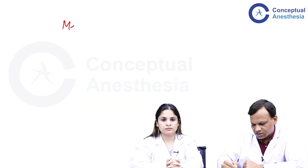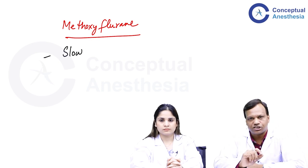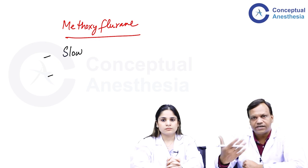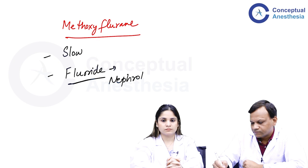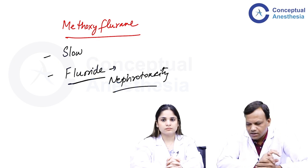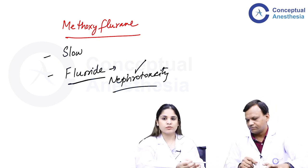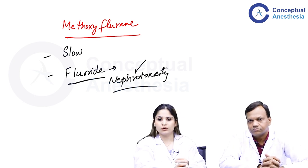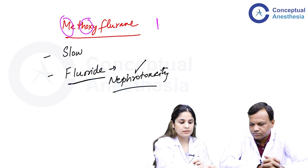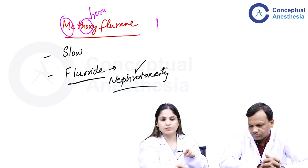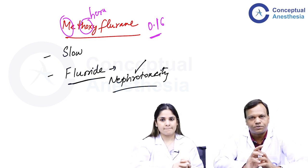Methoxyflurane is no longer used. It is the most potent inhalational agent (lowest MAC of 0.16) but also the slowest acting, with the highest blood-gas partition coefficient. Its major problem is that it releases large amounts of fluoride on metabolism, causing nephrotoxicity and high-output renal failure. The MAC mnemonic: 'me' = 1 person, 'hoxy' sounds like 'hexa' (six) — so MAC of methoxyflurane is 0.16. The MAC of nitrous oxide is 104%. These two are must-remember values.